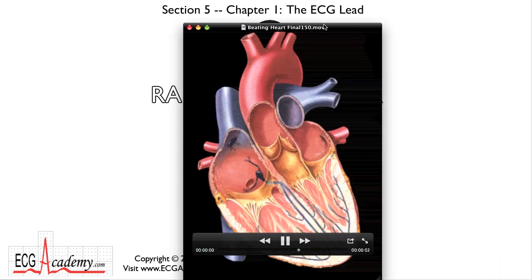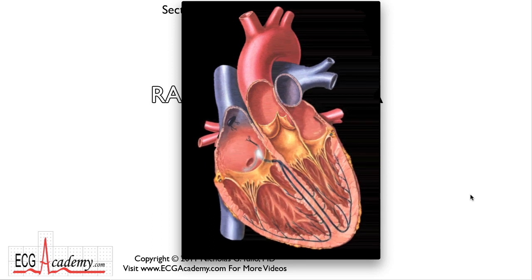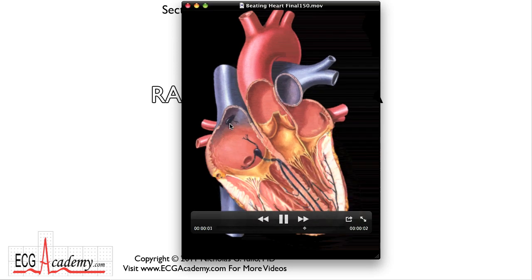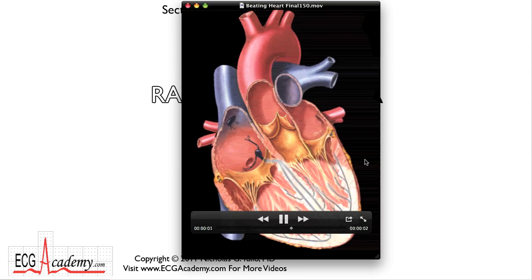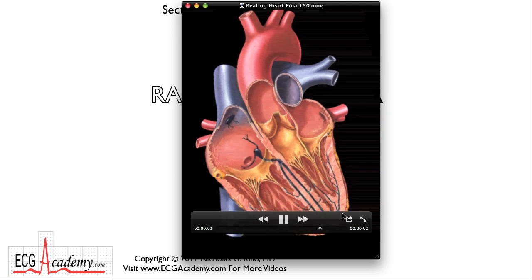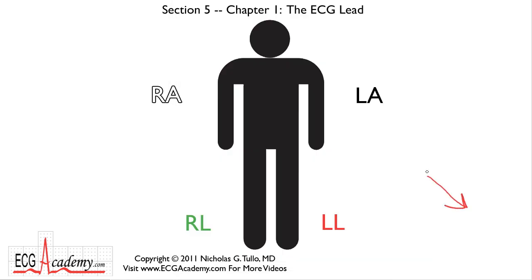As a review, the atrial signal starts in the high right atrium and travels down and to the left. Likewise, the signal that goes through the ventricle travels down the septum and towards the apex — down and to the left. The normal electrical signal travels down and to the left. In physical terms, this directional movement of an electrical signal is called a vector.